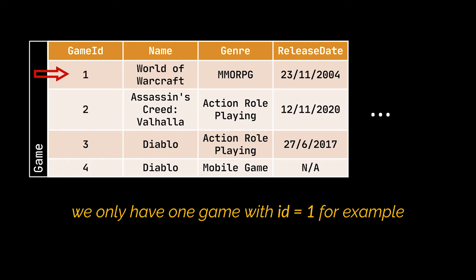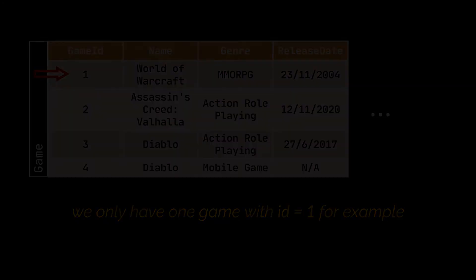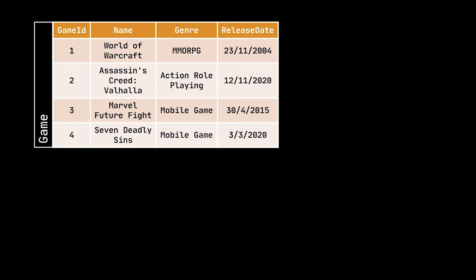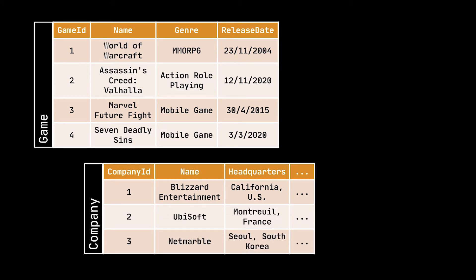After defining our tables, columns, and primary keys, the next step is the ability to create relationships from one table to another. Let's say that in our database we have three tables: the game table, which stores the details of given games, and the company table, which stores information related to several gaming companies.